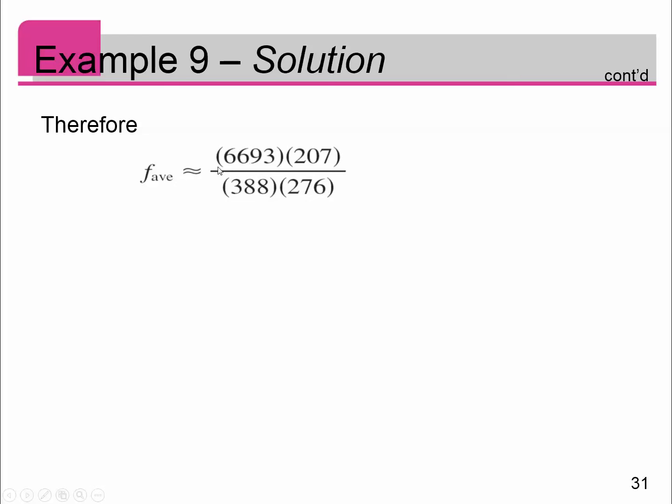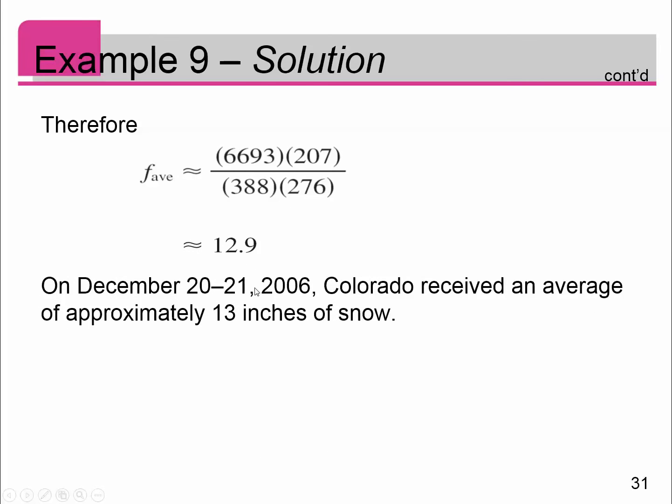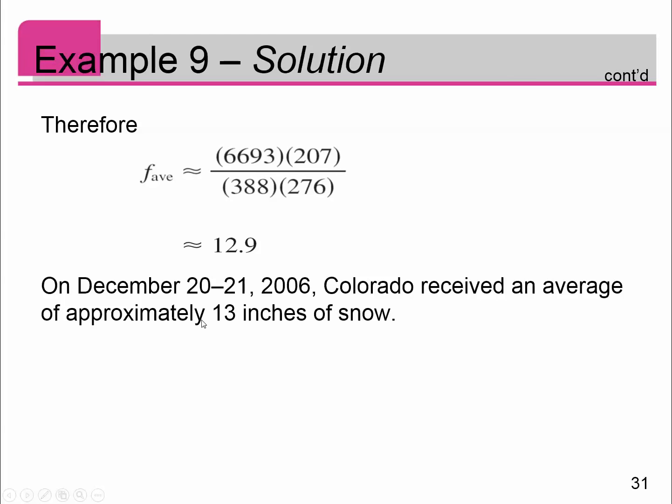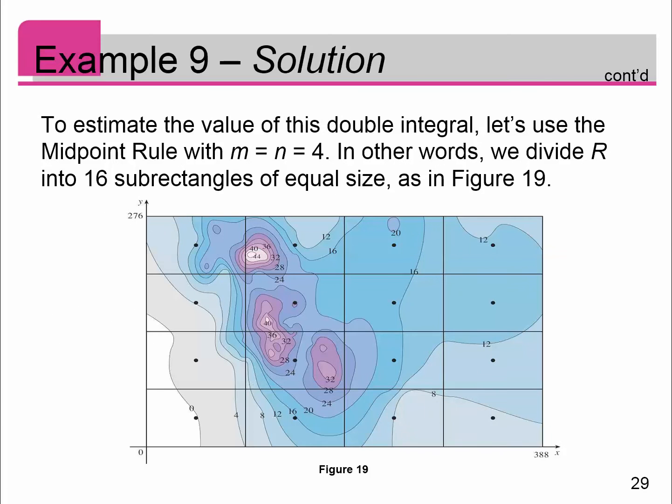The average value is going to be that double integral, the top, divided by the area of Colorado. The average snowfall was 12.9 inches. On December 20th through 21st, 2006, Colorado received an average of approximately 13 inches of snow. That's how we could do an average value when you have a contour map with all the different values. To go from that contour map to an average, that's a cool little trick that you're able to do now using double integrals. That's the end of section 15.1.